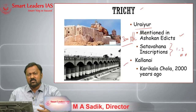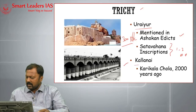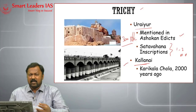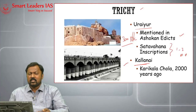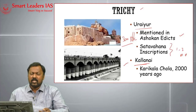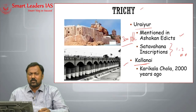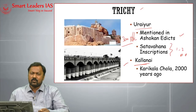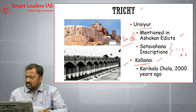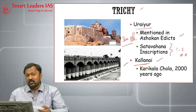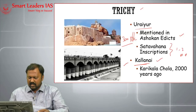Tiruchi is also known for Kallanai — an embankment on the Cauvery River. History says that Karikala Chola, a Chola ruler from the Sangam age, invaded Sri Lanka, enslaved 12,000 soldiers, brought them back to the Chola kingdom, and used them to build what is known as Kallanai. Karikala Chola can be traced approximately 2,000 years back, to the 1st or 2nd century AD.